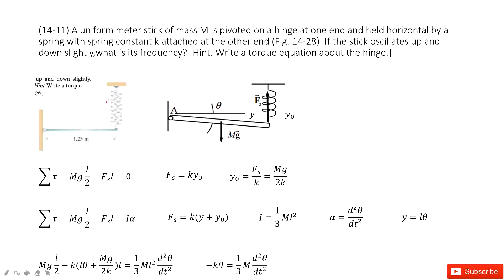In this system, we can see a spring connected with a stick. This stick oscillates up and down, and we are asked to find the frequency. It's very important that the problem gives you a hint to write a torque equation. First, we consider the initial extension on the spring holding the stick — we call it Y₀.